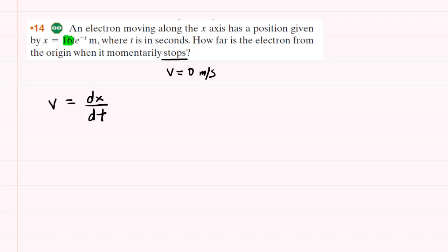The reason for that is because we have one function, 16t, being multiplied by another function, e to the negative t. So whenever you want to calculate the derivative of one function that's multiplied by another function, you have to use the product rule.